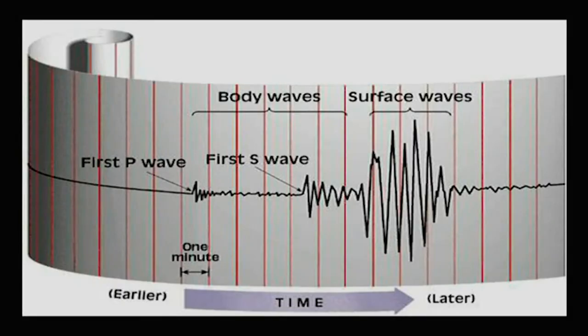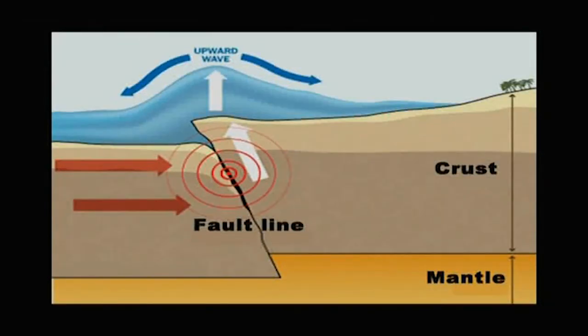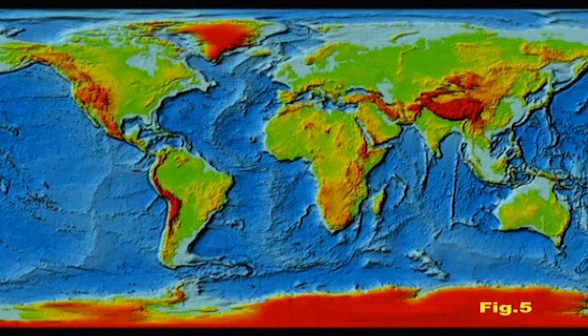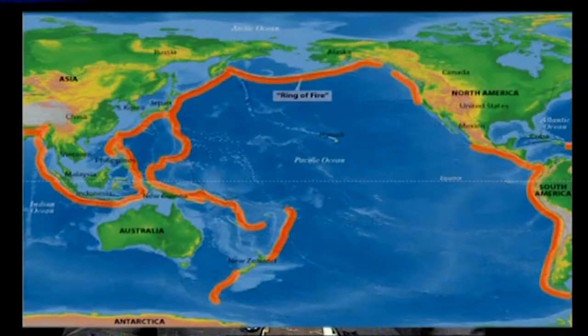The distribution of earthquakes is quite widespread. There are about a million minor shocks per year, with most shocks being minor. On average, about 20 major earthquakes per year occur in two main zones. Looking at figure number five — a world map showing the distribution of earthquakes — you can clearly see some belts. The first is the Pacific belt or circum-Pacific belt, constituting the western coastal and Rocky Mountains region and the Andes mountain region of North and South America respectively.